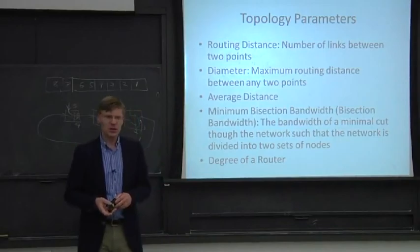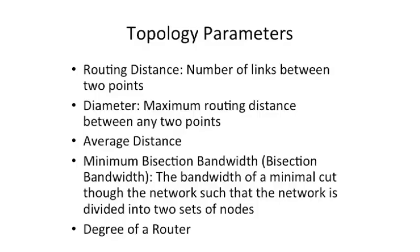First thing we're going to talk about is routing distance. So I've already been using this term, but this is effectively the number of hops or the number of links that you need to traverse to go from one point in the network to another point in the network. It's not the worst case one, it's not the best case one, it's just for any given two points, it is the distance.